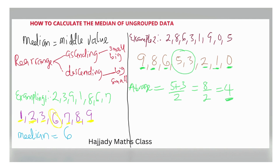So our median is 4 — that is the middle value for Example 2. We are going to stop here. In our next video we are going to look at how to calculate the median of ungrouped data with frequencies, which involves a formula. Statistics is very interesting — there is nothing difficult about it. Please subscribe to this channel for notifications on our next video, share this video, and your comments and recommendations are appreciated. Thank you very much, see you in the next video.